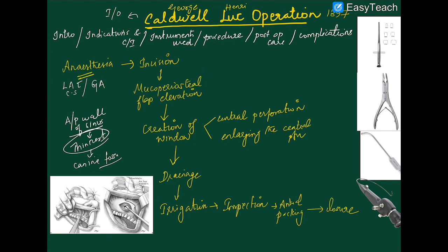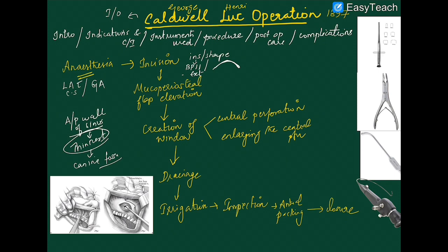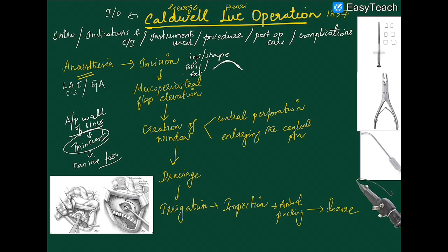First, identify the canine fossa, then make the initial incision. Three points about the initial incision: the instrument used is BP blade number 11, and the shape is a semilunar incision. The extension of this semilunar incision runs from the canine tooth to the second molar tooth. Always remember that the incision should be larger than the window you are going to create later — if the window is two to three centimeters, the incision must be larger.